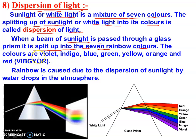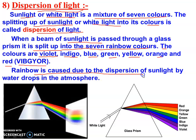The colors are violet, indigo, blue, green, yellow, orange, and red — remembered as VIBGYOR, which is the short form of these seven colors. The rainbow is caused due to the dispersion of sunlight by water droplets in the atmosphere. In the rainy season, water drops are suspended in the atmosphere, and when sunlight passes through these droplets, it splits into seven colors, so a rainbow appears in the sky.